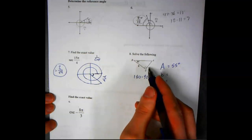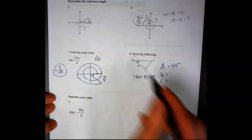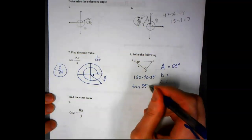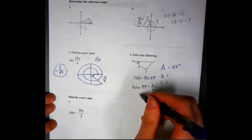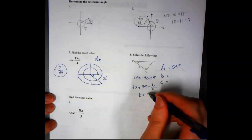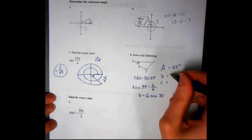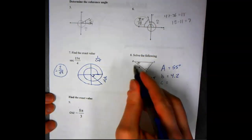For side B, right now we are looking for the opposite side, and we have the adjacent side. So we'll say tangent of 35 equals B over 6. When we do this all, we'll have B equals 6 tan 35, and that equals just about 4.2.